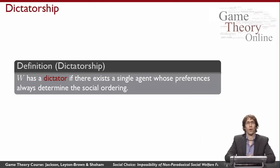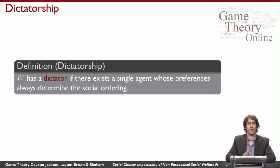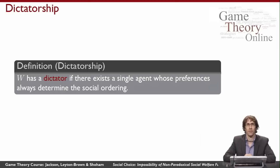A social welfare function has a dictator if there exists a single agent whose preferences we always return as the social ordering. If I've got N different agents and I say, 'I only care about Agent 3 — everybody else, it doesn't matter what you tell me, I'm going to throw it out and give you back Agent 3,' and I've decided in advance who Agent 3 is, it's always going to be the same person — that's what it means for a social welfare function to have a dictator.